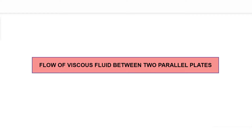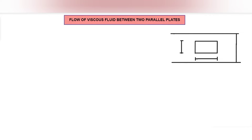Here we have two fixed parallel plates, as shown in the figure, which are a distance d apart. The distance between the two plates is d, and we have considered a small rectangular element which has length dx and thickness dy. This rectangular element is at a distance of y from the lower fixed plate.